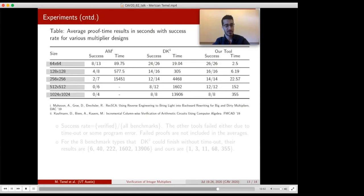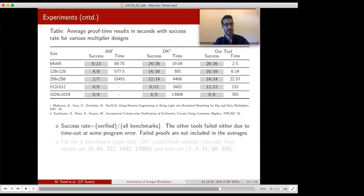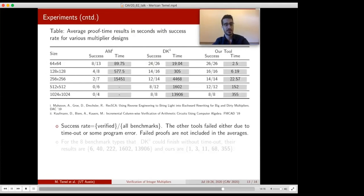We give average timing results for each multiplication size from 64 by 64 to 1024 by 1024 bit multiplication. The other tools could not verify some benchmarks due to program errors or timeouts, so we also show the success rate on separate columns. Our tool is orders of magnitude faster than the other tools, could verify all designs, and has a much better scaling factor.